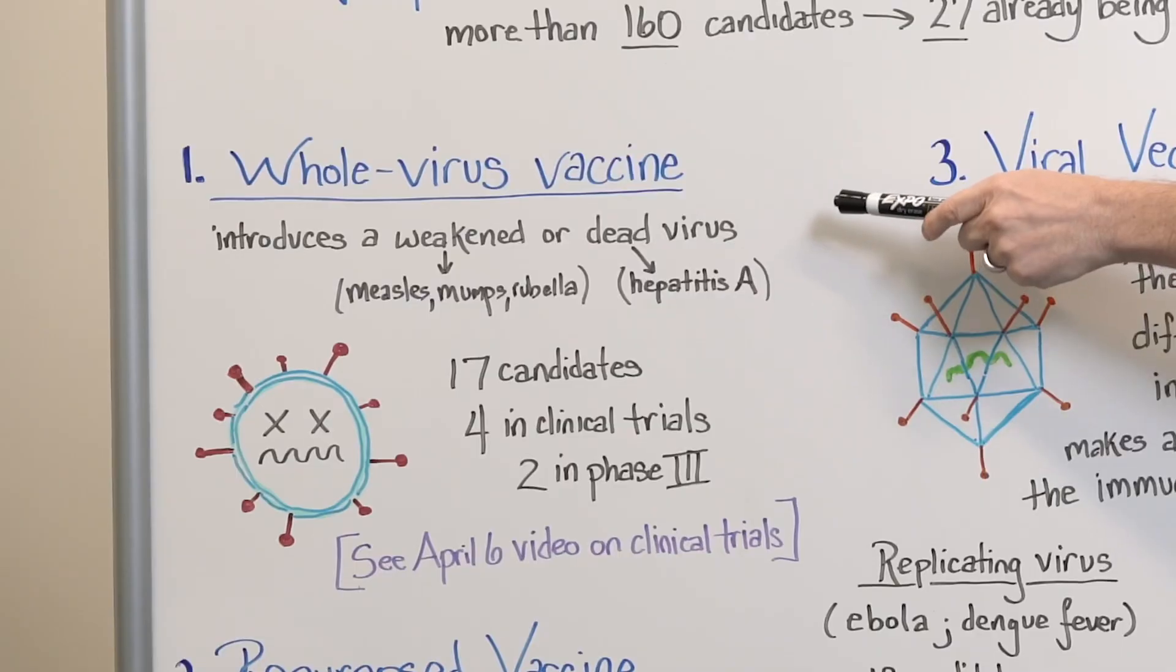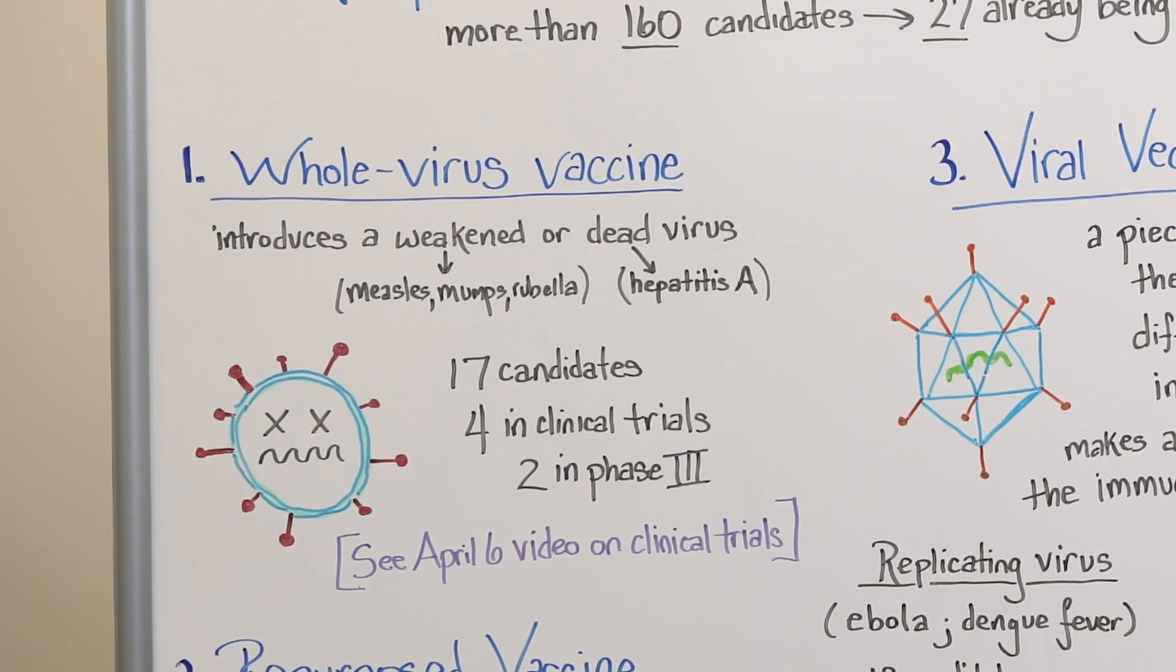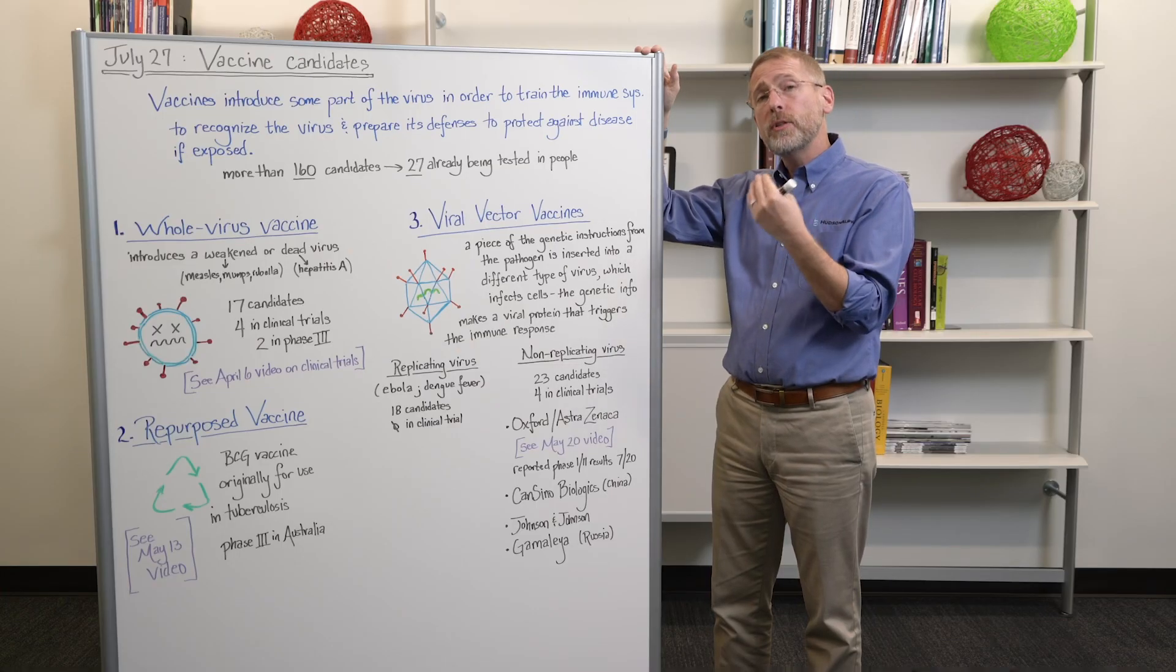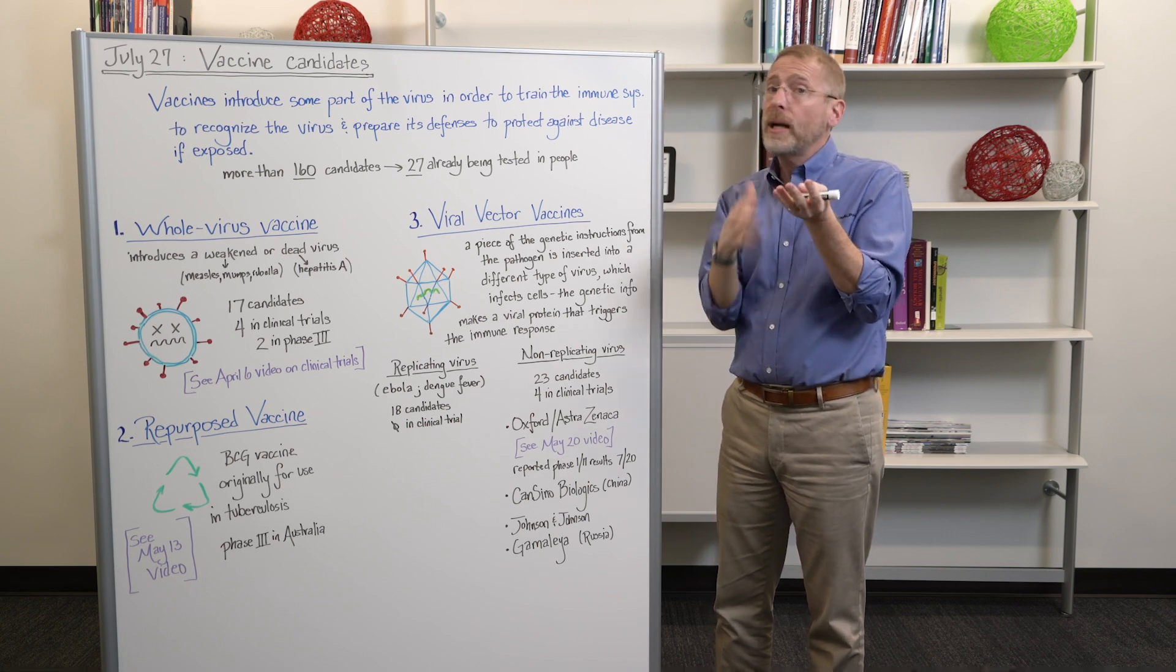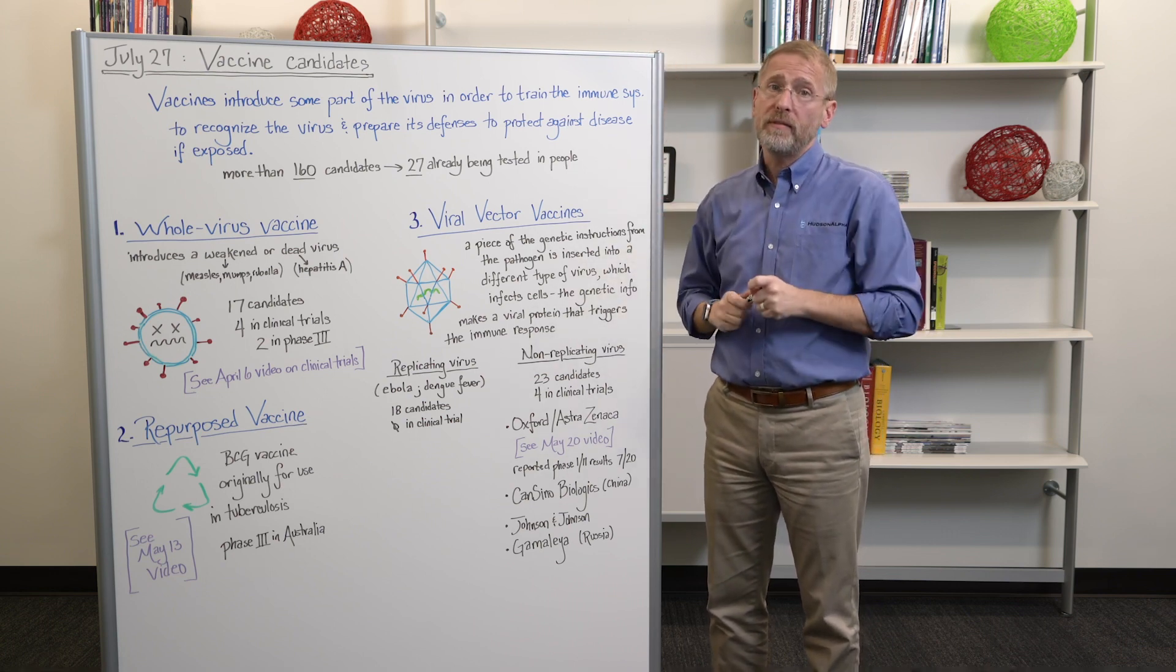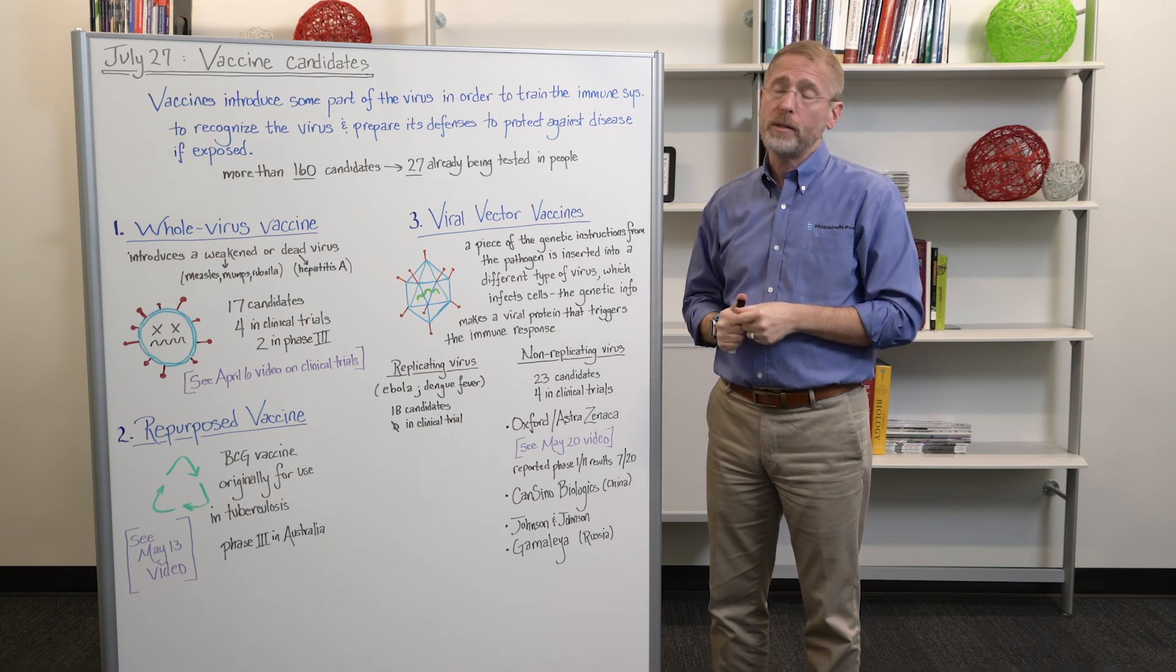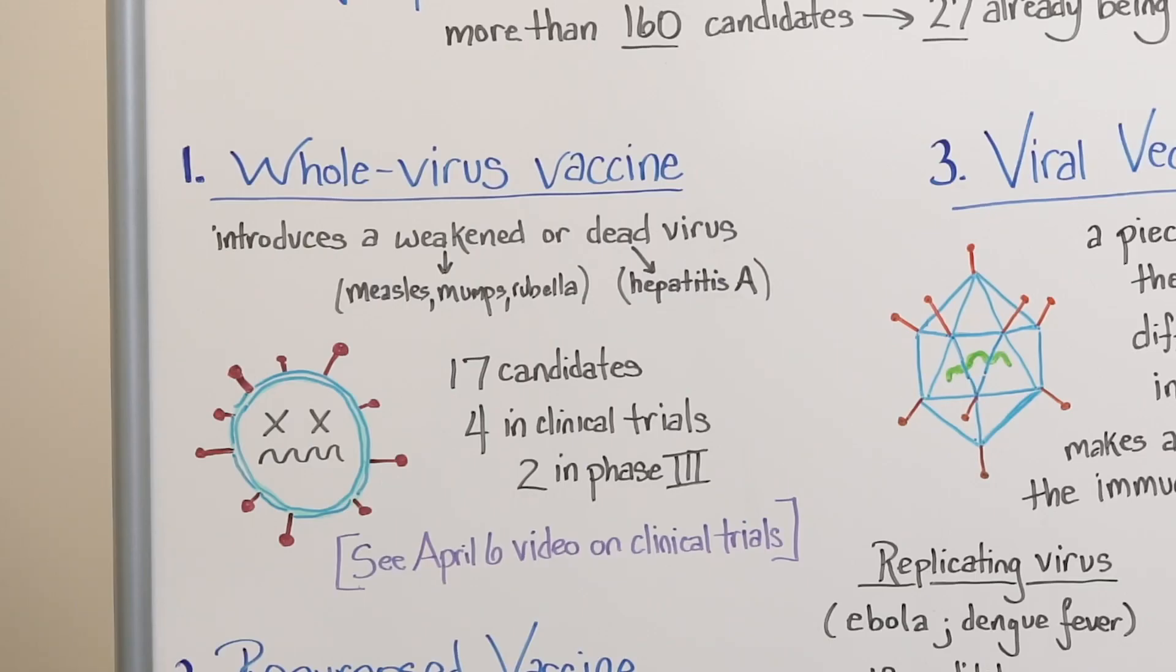The first is whole virus vaccine. This is the traditional way that vaccines have been made for decades. And it introduces, it involves introducing a weakened version of the virus or a completely inactivated version of the virus in order to mount a response. And the weakened version is the way that the measles, mumps and rubella vaccine is created. And a dead virus is what happens when you have a vaccine for hepatitis A.